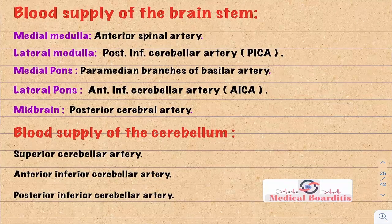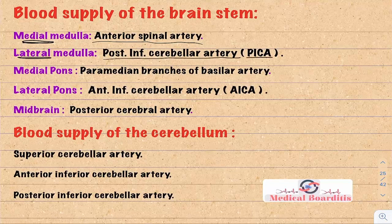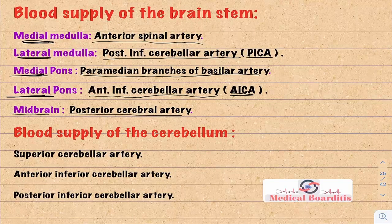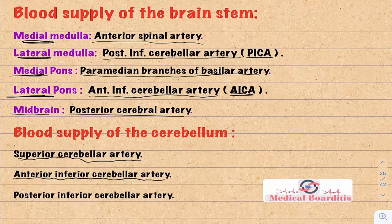Quick review of blood supply to the brainstem: the medial medulla is supplied by the anterior spinal artery; the lateral medulla by PICA; the medial pons by the paramedian branches of the basilar artery; the lateral pons by AICA; the midbrain by the posterior cerebral artery. Blood supply to the cerebellum consists of three arteries: the superior cerebellar artery, the anterior inferior cerebellar artery, and the posterior inferior cerebellar artery.